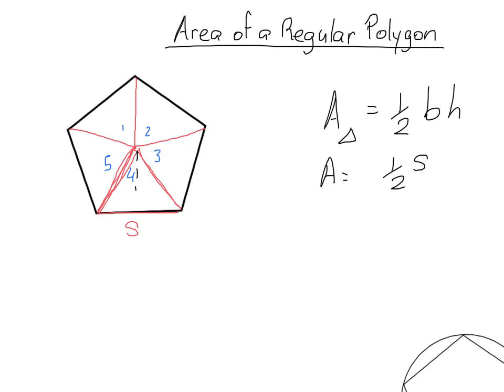Now the height of this triangle has a certain name. There is a name for the thing that goes from the center of our polygon perpendicular to the side, and that's called the apothem. So in order to figure out the area of triangle 4, it is half base, which is called side in this case, times height, which is called the apothem. So half side times apothem.